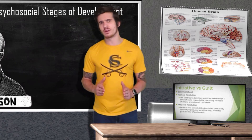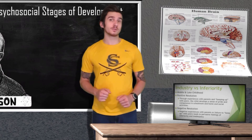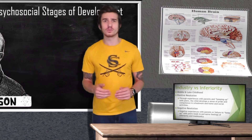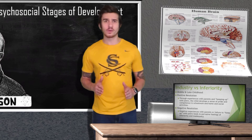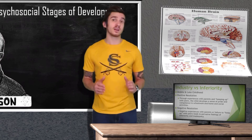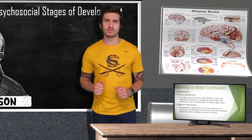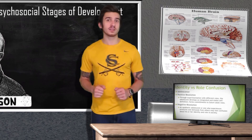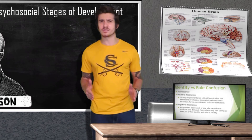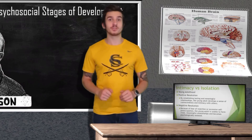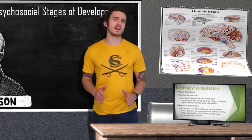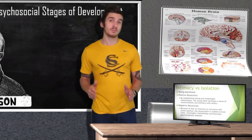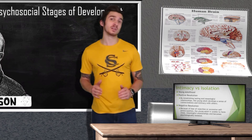In middle and late childhood, many social interactions occur outside the home with peers — this is the industry versus inferiority stage. Positive experiences with parents and peers develop pride and confidence; negative experiences can lead to inferiority and inadequacy. In adolescence, the identity versus role confusion stage has teens forming a sense of self and commitments to future adult roles. In young adulthood, intimacy versus isolation emerges — establishing lasting, meaningful relationships develops connectedness, while fear of rejection can lead to psychological isolation.